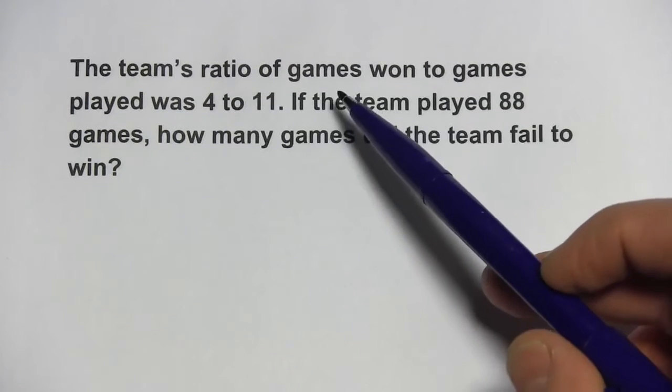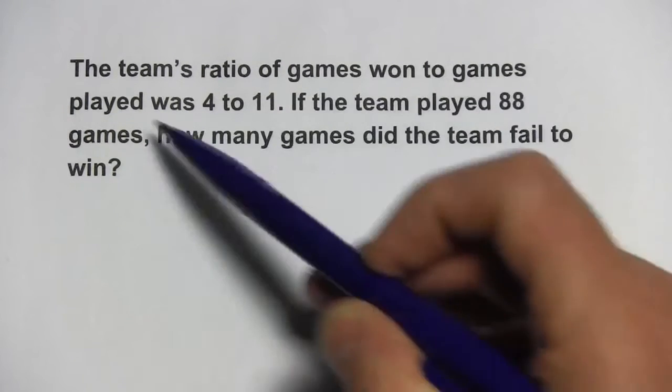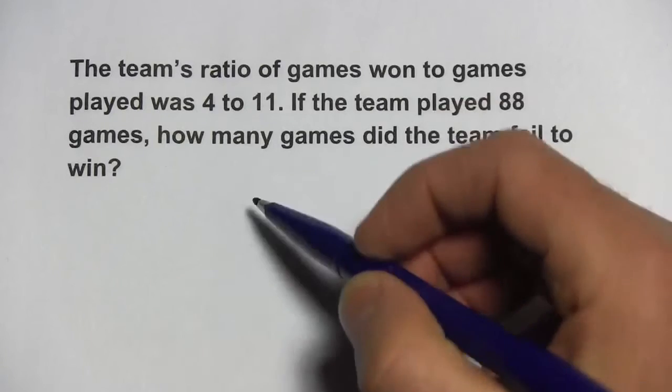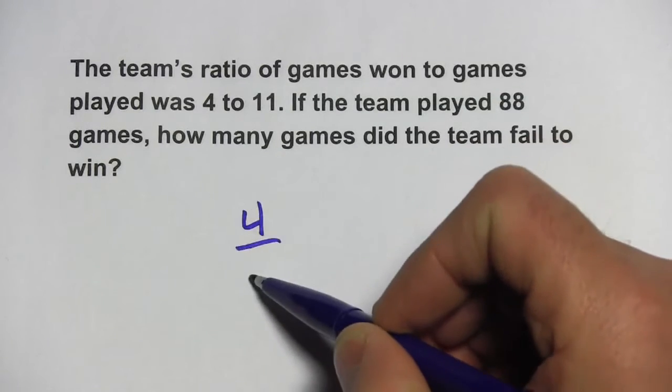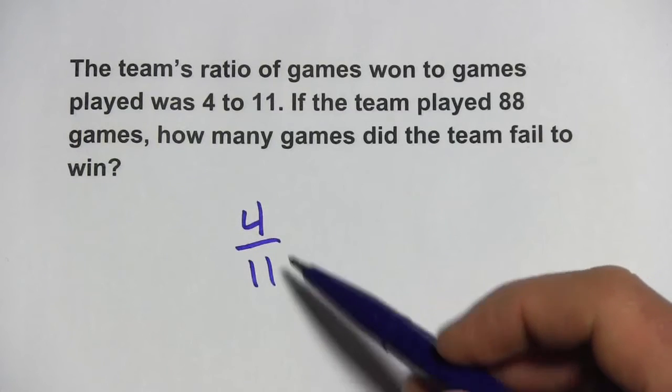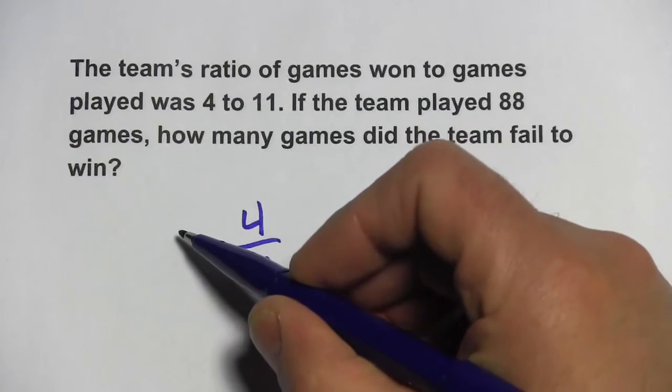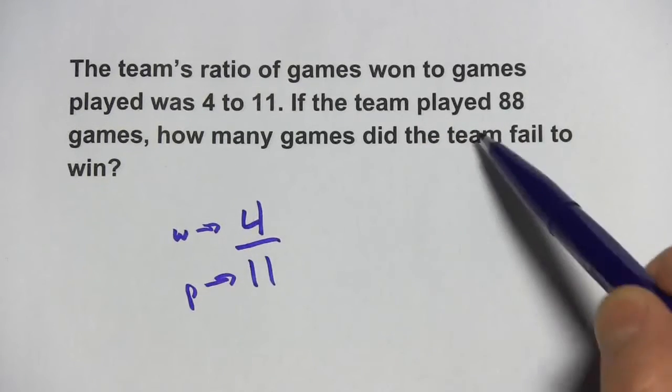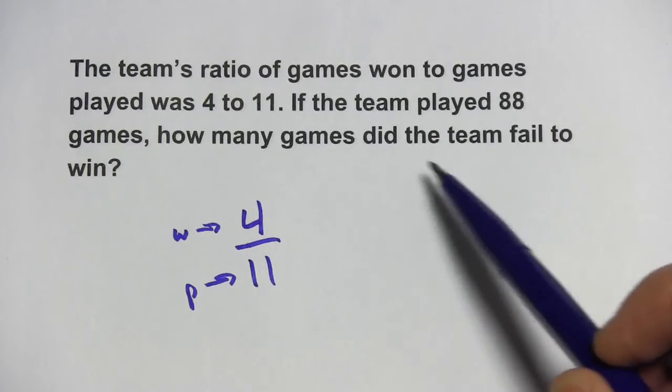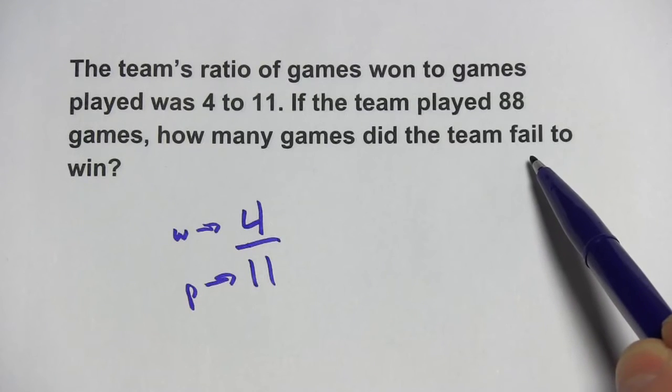So this one says the team's ratio of games won to games played was 4 to 11. So we can write that ratio out. We have 4 games won and out of 11 games played. So that's the games won and the games played. If the team played 88 games, how many games did the team fail to win?